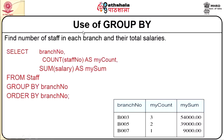As related in the query, which says find the number of staff in each branch, I have listed branch-wise. Branch number is the initial value, the second projection is on my_count, and the third is on my_sum. Branch 003 has 3 staff members, branch 005 has 2 staff members, and branch 007 has only 1 staff. The total salary for branch 003 is 54,000, for branch 005 it is 39,000, and for branch 007 it is 9,000. We have grouped it by branch number and ordered it starting from 3, 5, and 7.